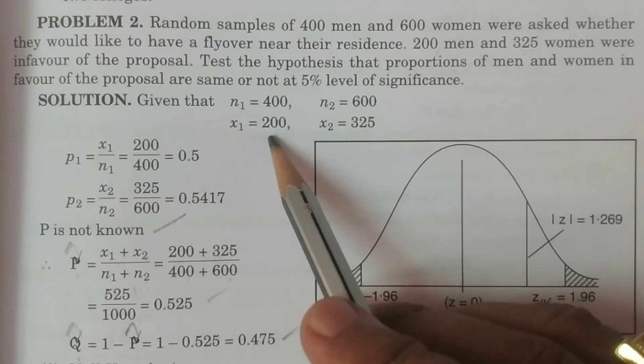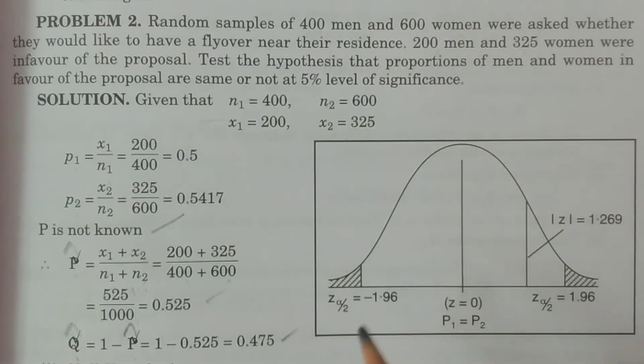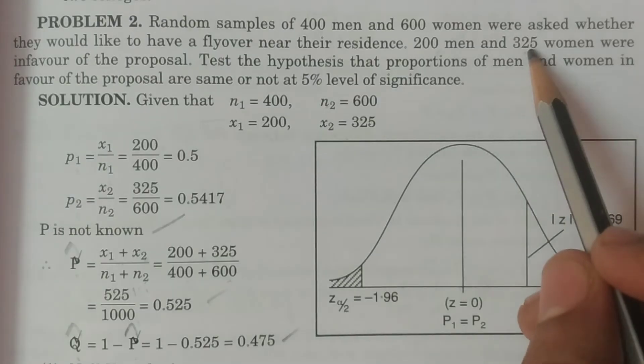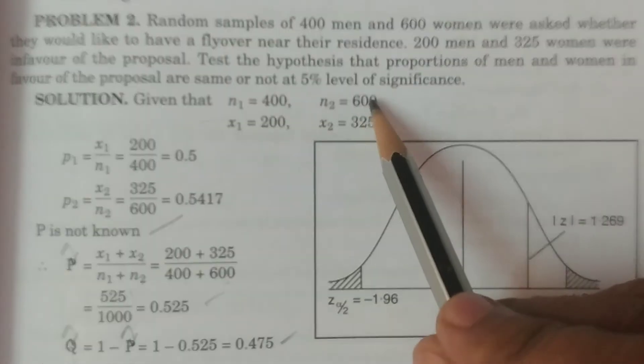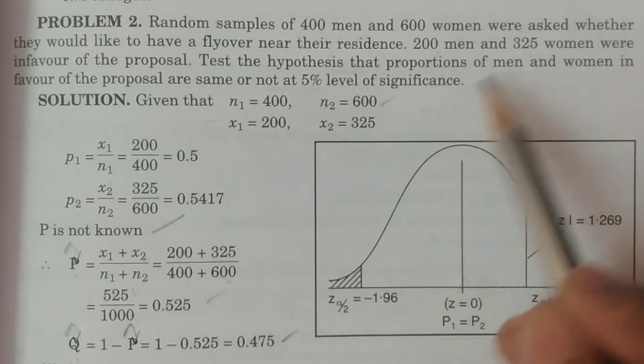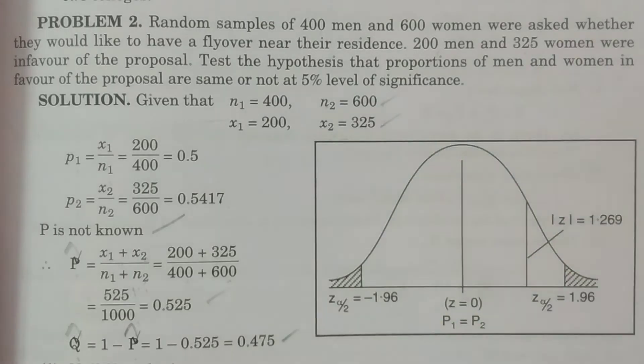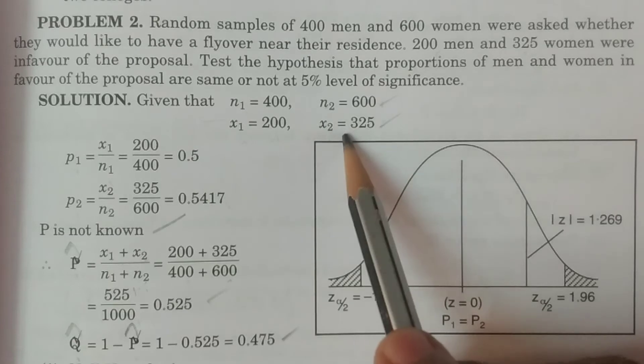So we have x1 is 200. This is a proportionate test. We identify that n1 equals 400, n2 equals 600. Since 325 women are in favor, x2 equals 325. So we have n1, n2, x1, x2.